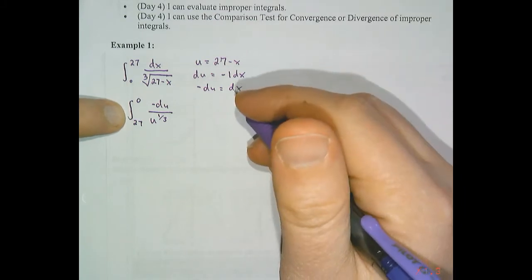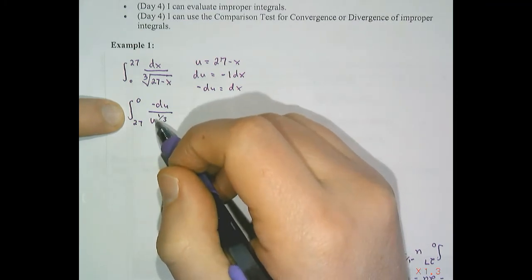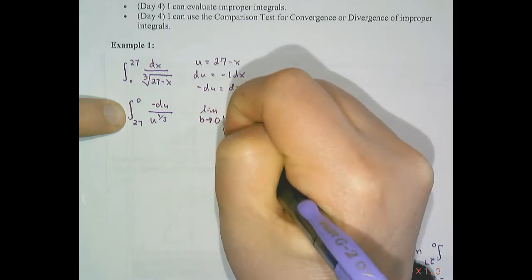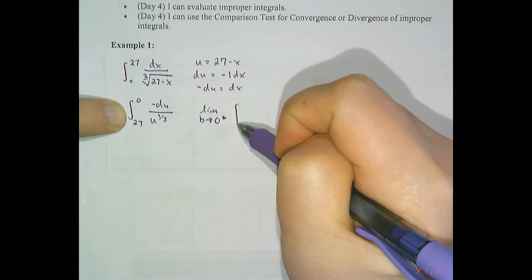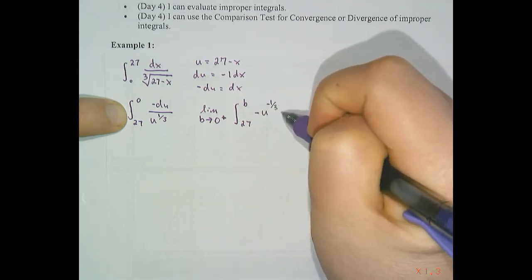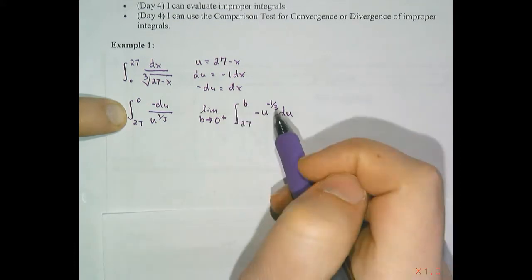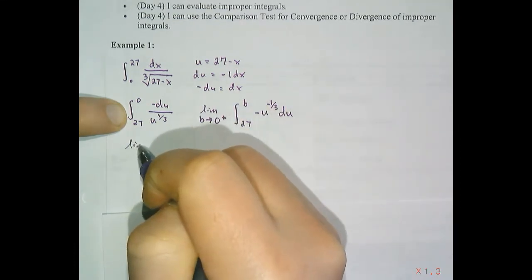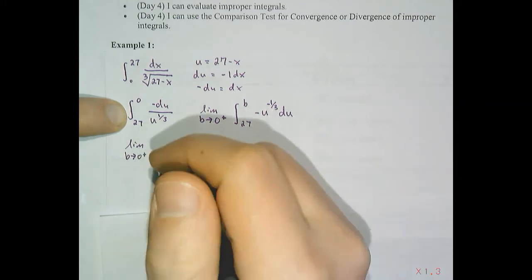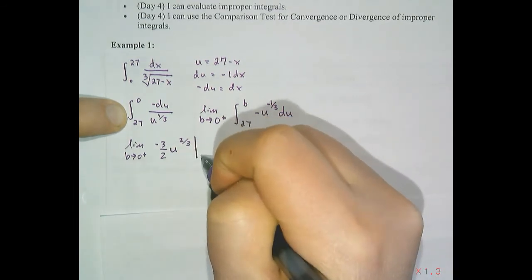This improper integral is improper at zero because zero is what's causing the vertical asymptote, now that we're in terms of u. To evaluate the improper integral, I need to write my limit expression: the limit as b approaches zero from the right-hand side of the integral from 27 to b of negative u to the negative one-third du. This is a power rule for integrals, so we add one to the exponent and divide by the new exponent, giving us negative three-halves u to the two-thirds, evaluated from 27 to b.